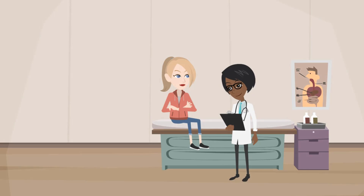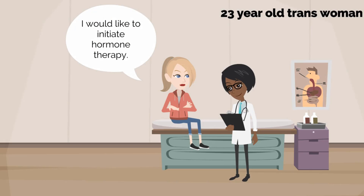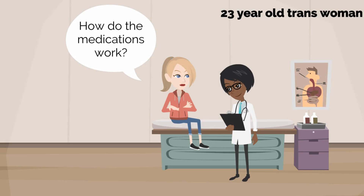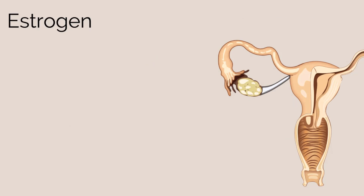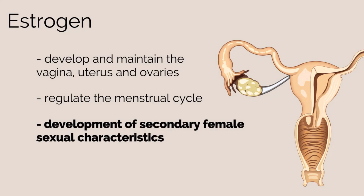Let's meet our second patient. She is a healthy 23-year-old trans woman who would like to initiate gender-affirming hormone therapy. She would like to know how the medications work and what kind of changes will happen. Before discussing hormone therapy, it is first important to understand the role of female sex hormones and how they are produced in the body. Estrogens are responsible for developing and maintaining the vagina, uterus, and ovaries. Estrogens regulate the menstrual cycle and are involved in ovarian function and follicular maturation. In addition, estrogens are important for the development of secondary female sexual characteristics, such as breast development.